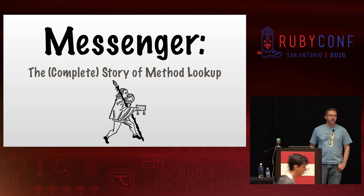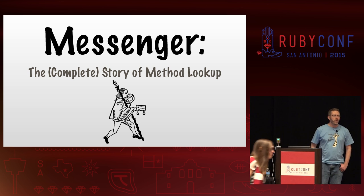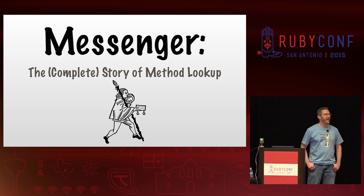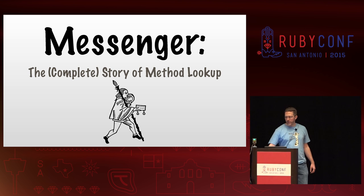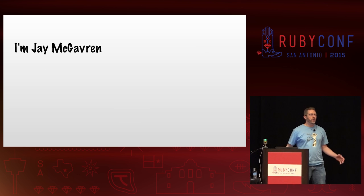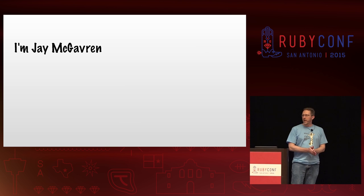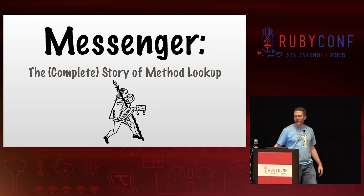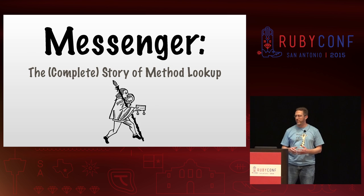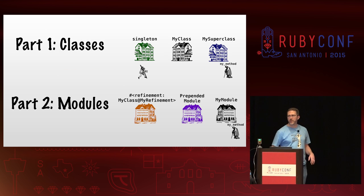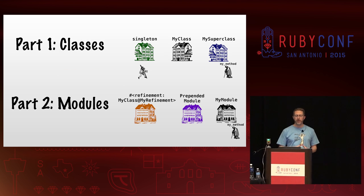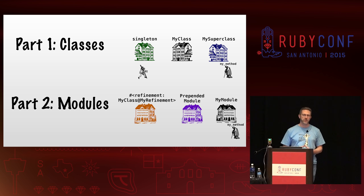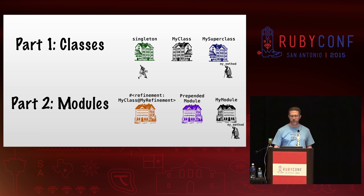I want to make time for questions, so I'll move at a brisk pace. If I'm overwhelming you, just raise a hand, I'll slow it down a little bit. I'm Jay McAverin. I wrote this thing, and this is Messenger, the complete story of method lookup in Ruby. This talk is going to take place in two major parts. The first is all about methods defined on classes, including some places you might not expect them to be.